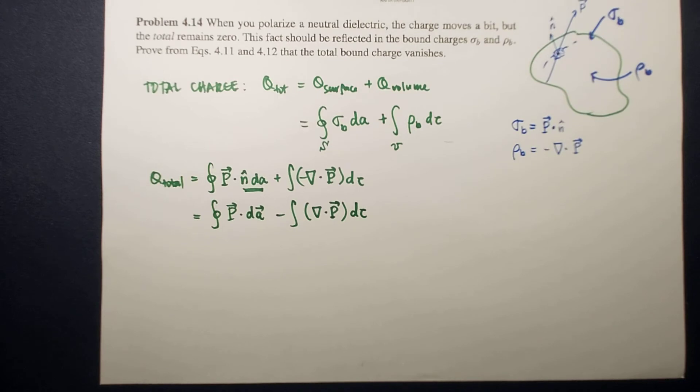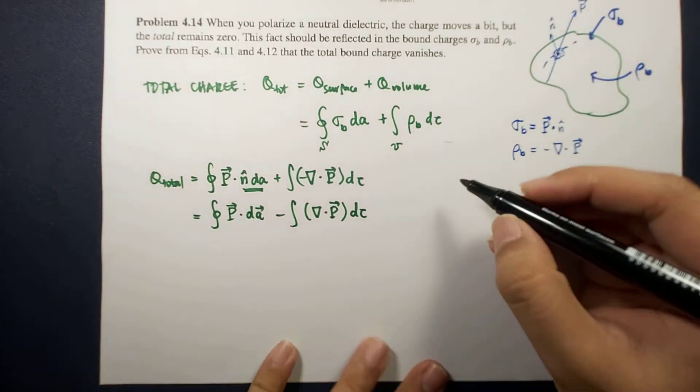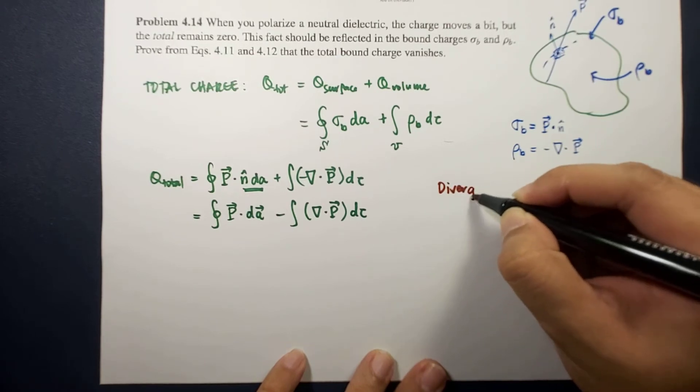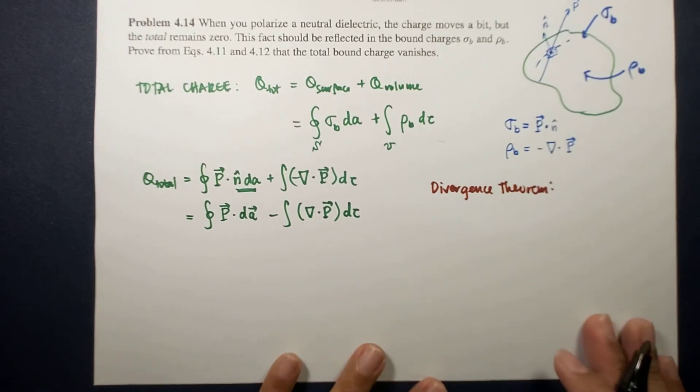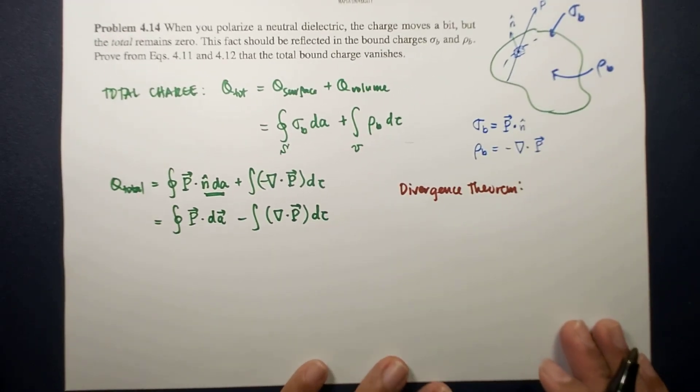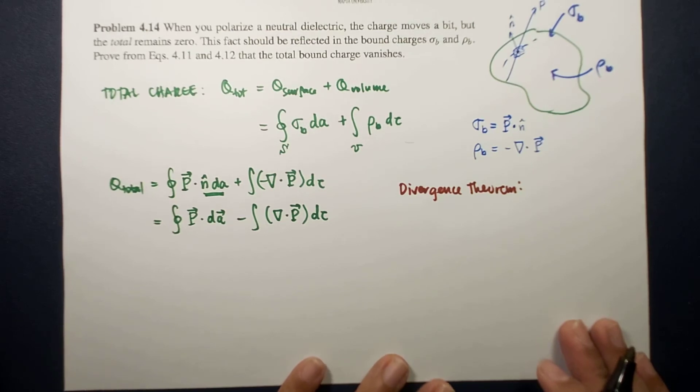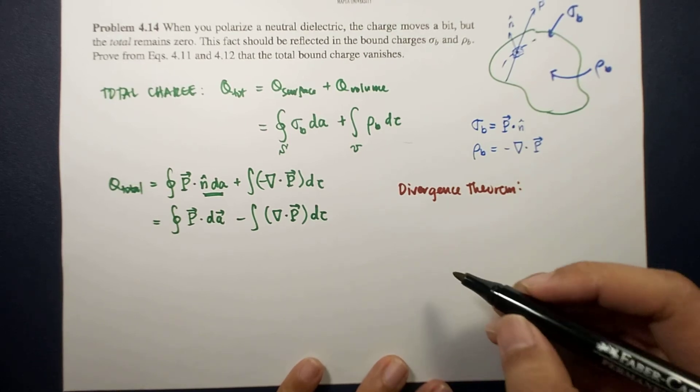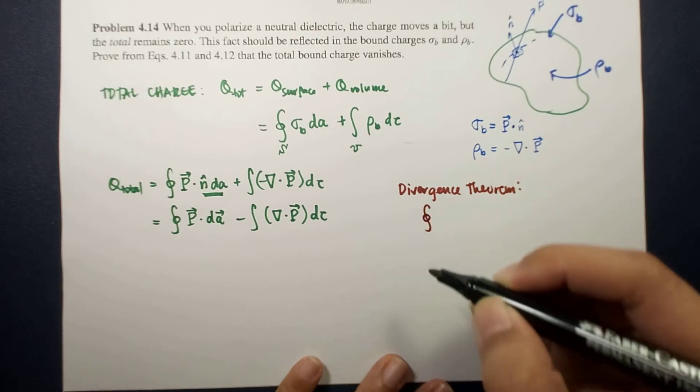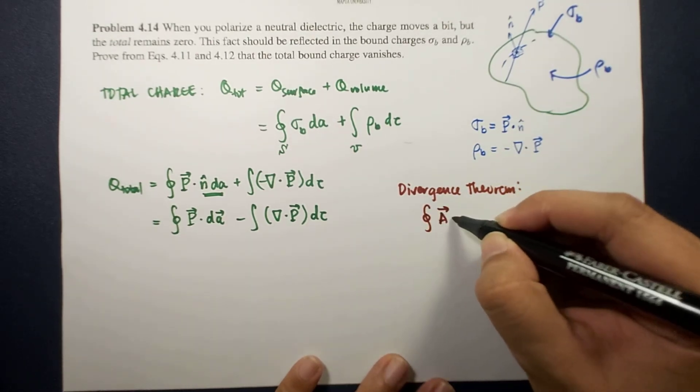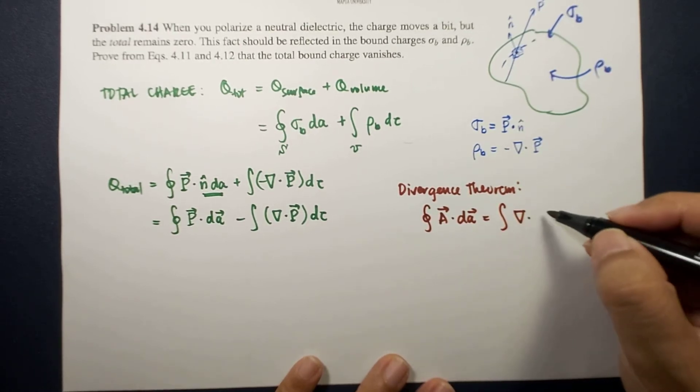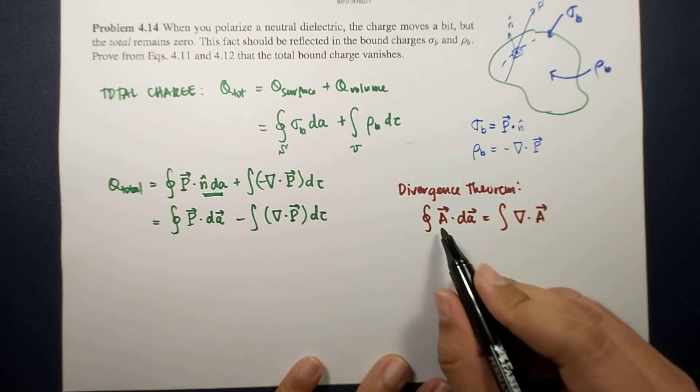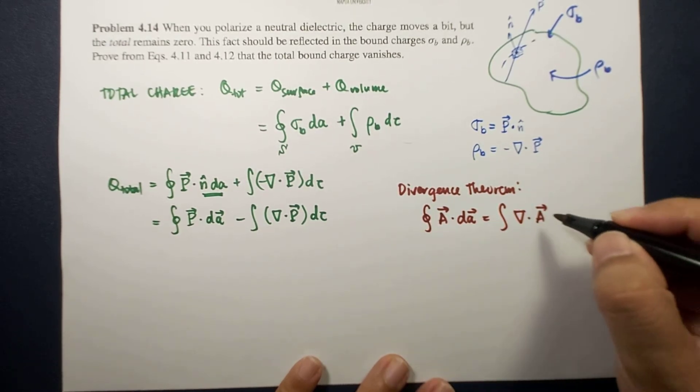If you're going to recall in our first few discussions before, the divergence theorem relates integration on the area that bounds a volume to the divergence within the volume in a vector field. In equation form, this is A dot dA equals the divergence of the vector field A dV.